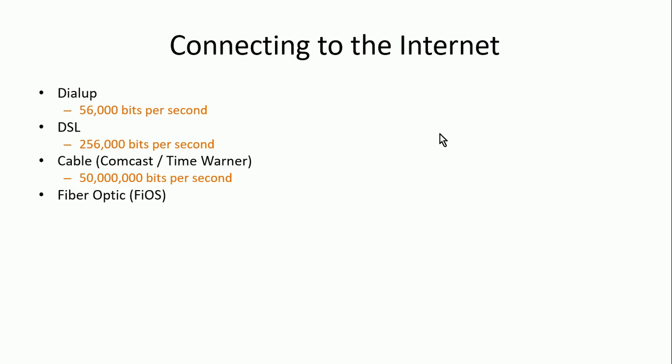If it's available in your area, Verizon has FiOS — there are similar fiber optic services in different areas. FiOS uses fiber optic technology; it's still broadband and still uses modulation, basically converting data to light — think of it as blinking light in a cable. Light is very fast. FiOS provides about 100 million bits per second for consumers; for businesses it can be considerably faster. So we've gone from 56,000 bits all the way up to 100 million bits per second.